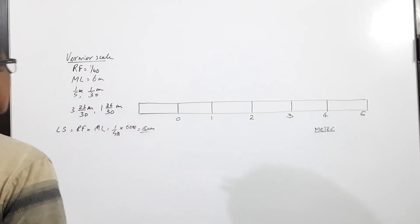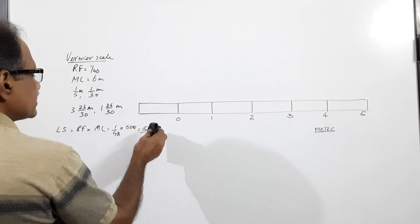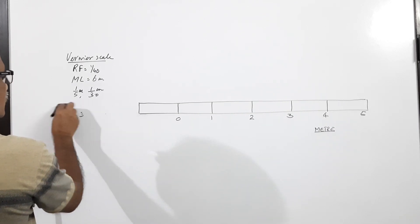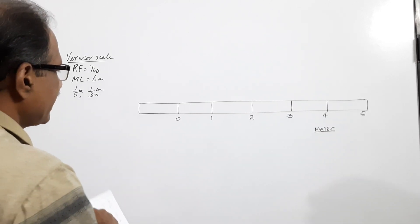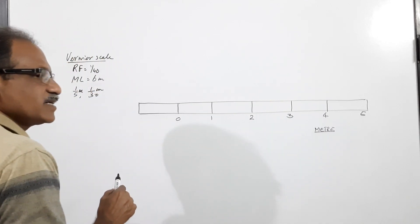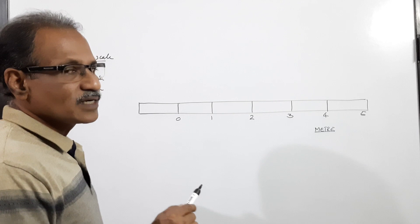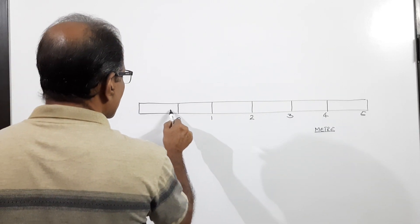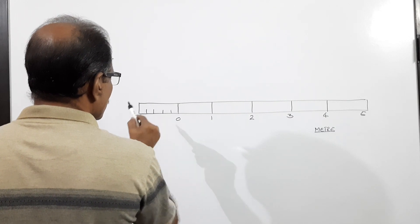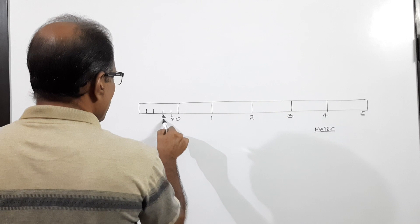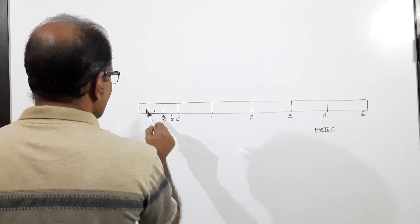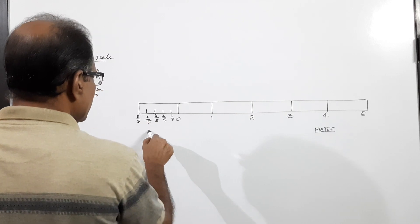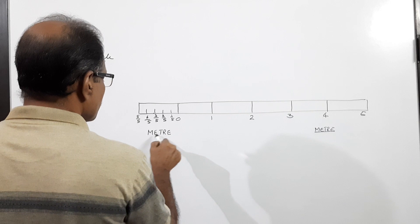The question says 1/5 and 1/30 are the distances to be read. I am dividing the leftmost division into equal parts. To show 1/5 of a meter, since this leftmost division represents one meter, I divide it into 5 equal parts: 1/5, 2/5, 3/5, 4/5, 5/5 — unit is meter.